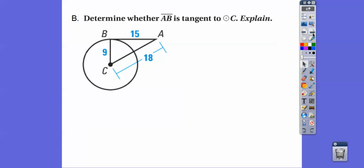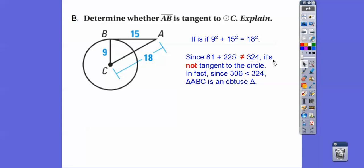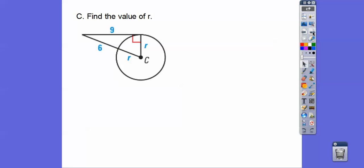Determine whether A-B is tangent to circle C and explain. Well, it's tangent if it makes a right angle, and if it makes a right angle, then it makes a right triangle, and the Pythagorean theorem would work. So, does A-squared plus B-squared equal C-squared. We get 81 plus 225, that does not equal 324. So, it's not tangent to the circle. In fact, since this side is bigger than these two guys squared, it's an obtuse triangle. If it was smaller, it would be an acute triangle, and if it's equal, it's a right triangle. It's not tangent.